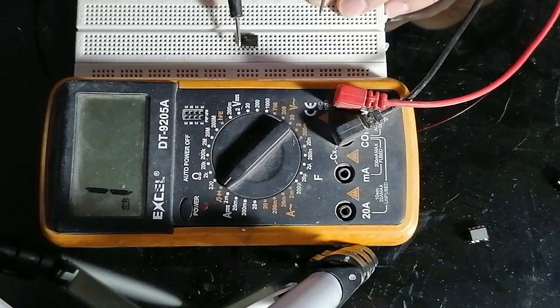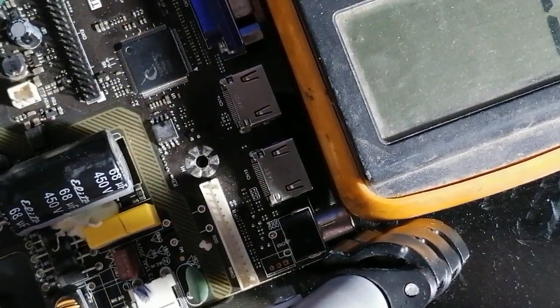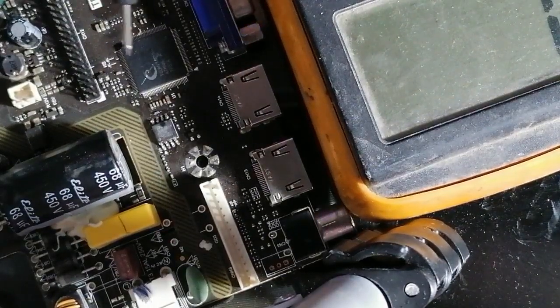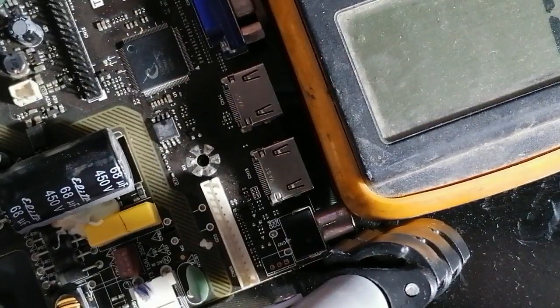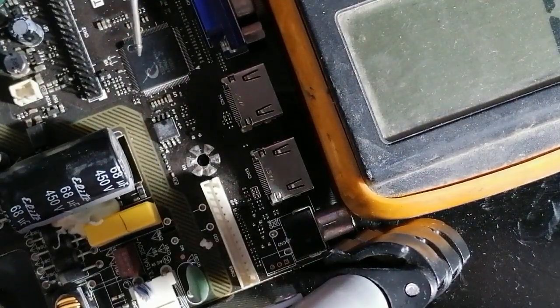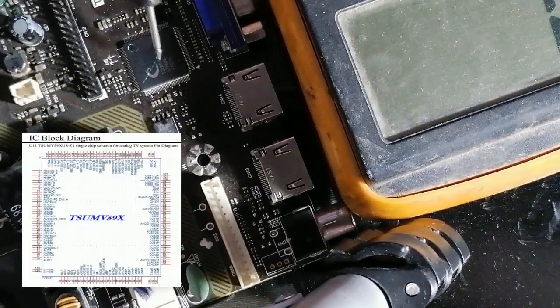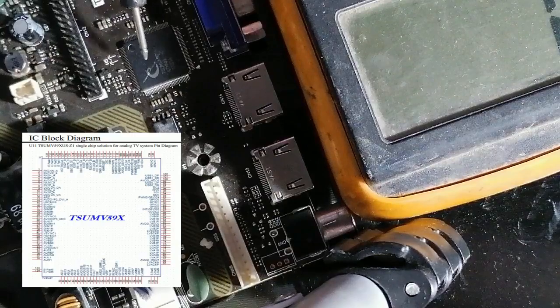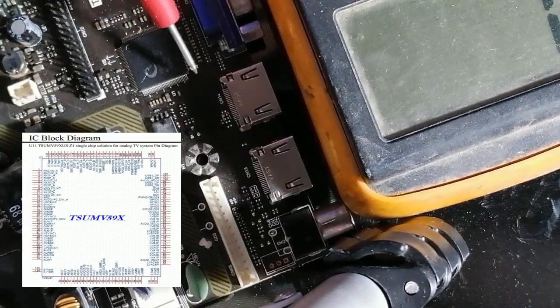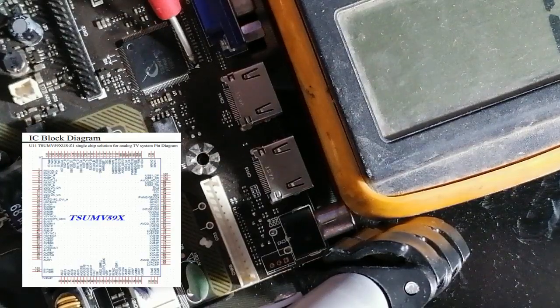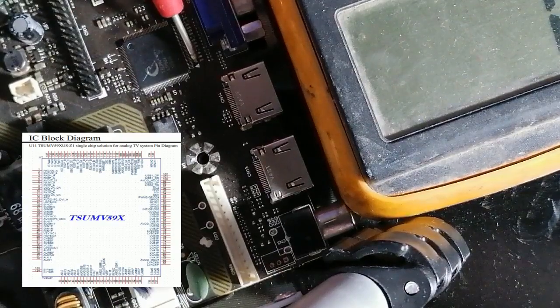For example, I'll give you another example. This IC is a system control IC used for LED TVs. This IC supplies 1.2 volts and 3.3 volts. So I will check pin number one, which represents the voltage supply, and pin number two.